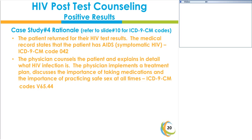Because the patient has the HIV infection, the principal diagnosis is 042. Because the physician counseled the patient, provided medication tips, and counseled the patient on the importance of safe sex, the counseling code V65.44 is also included.